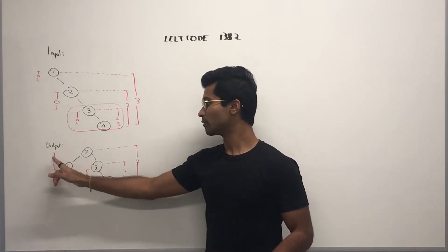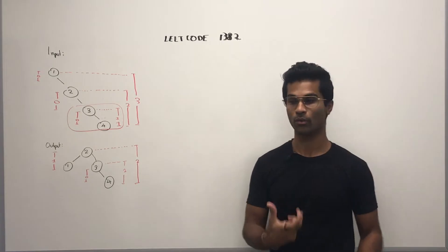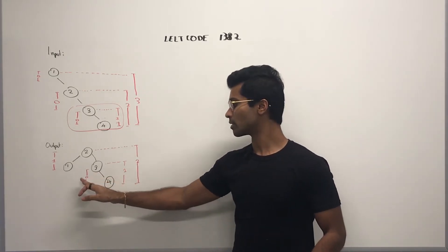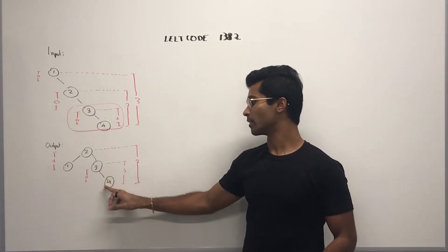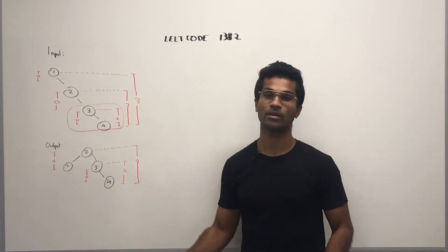So for two, the left subtree has a depth of one and the right subtree has a depth of two, so a difference of one. For three, the left subtree has a depth of zero and the right subtree has a depth of one.